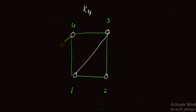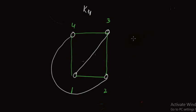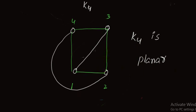So we choose an alternative path and connect vertex 4 and vertex 2 that way. Now you can see that all the vertices are connected. This is a complete graph and there is no edge crossing, so K4 is also a planar graph. We can draw K4 on a plane without edge crossing.